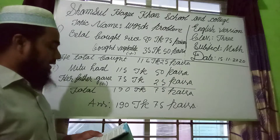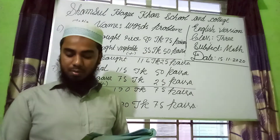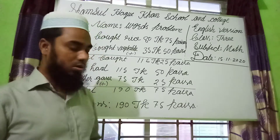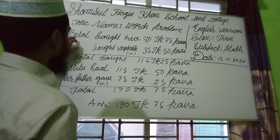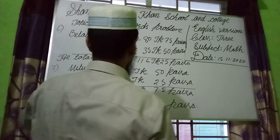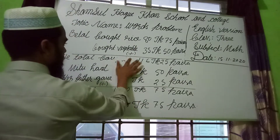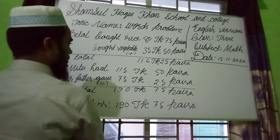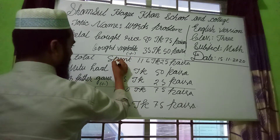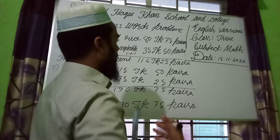Now number 6. Belal bought rice for 80 Taka 75 Paisa and vegetables for 35 Taka 50 Paisa. How much did he spend in total? The total spent is 116 Taka 25 Paisa.